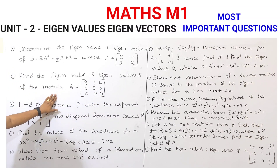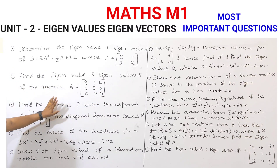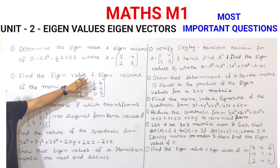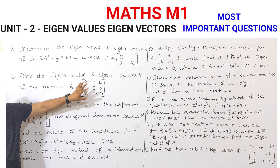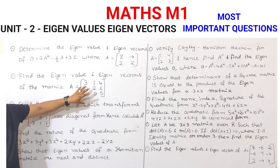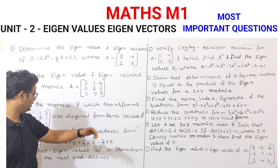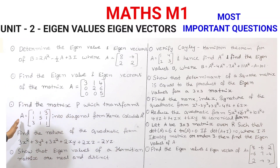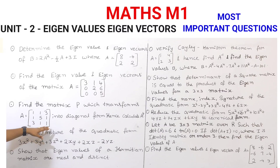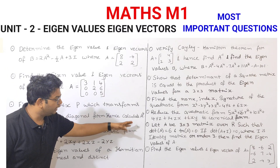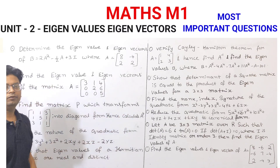This question is straightforward — compare it on first attempt, it is easy. Next, find the matrix P which transforms A equal to [1,1,3; 1,5,1; 3,1,1] into diagonal form, and hence calculate A to the power of 4.